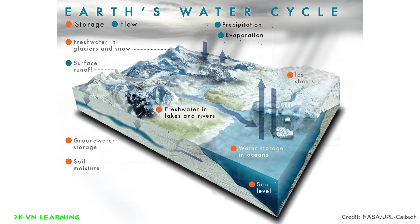Water from plants and trees also enters the atmosphere. This is called transpiration. This is when the water from plants enters into the atmosphere — when the water inside the plants or moisture from the soil evaporates. When it evaporates in this way, it is called transpiration.